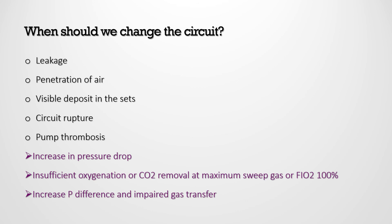Indications for circuit change include: leakage in the circuit, air penetration, visible deposits in the circuit tubing, circuit rupture, or pump thrombosis. When there is a problem with the oxygenator — such as increasing pressure drop, insufficient oxygenation or CO2 removal at maximum sweep gas or FiO2 100%, increased pressure differential, or impaired gas exchange — these reflect an oxygenator problem. Sometimes only the oxygenator is changed; in some cases, such as with certain cardio-health systems, the whole circuit must be changed.